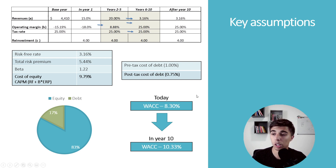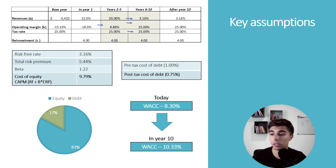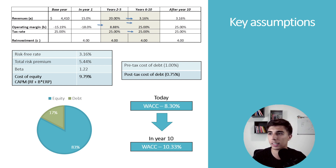As for the weighted average cost of capital based on today's inputs, it's about 8.3%. But the Fed is expected to increase rates, so in year 10 as a mature company I have a WACC of 10.3%, mainly because the risk-free rate is going to keep increasing over the next year or two at least.